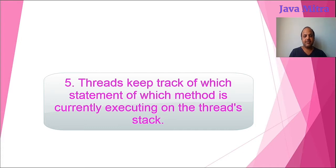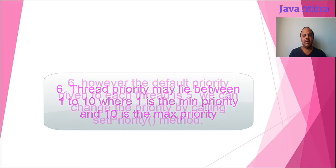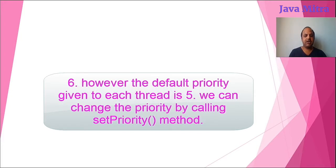Thread priority may lie between 1 to 10, where 1 is the minimum priority and 10 is the maximum priority. However, the default priority given to each thread is 5. We can change the priority by calling setPriority method.